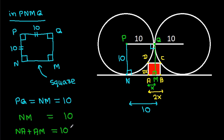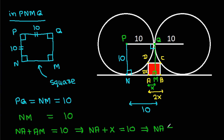We have nm = 10, and nm = na + am = 10. Since am = x, we get na + x = 10, so na = 10 - x.